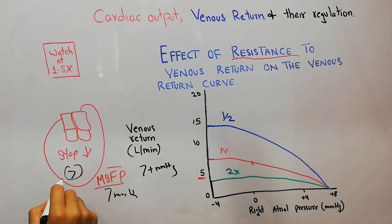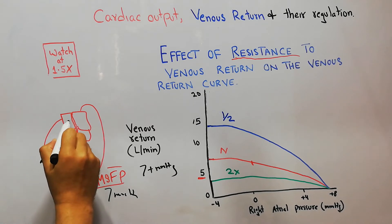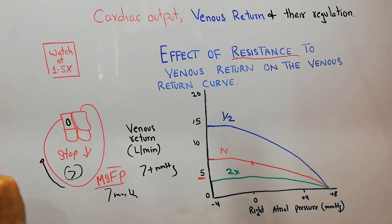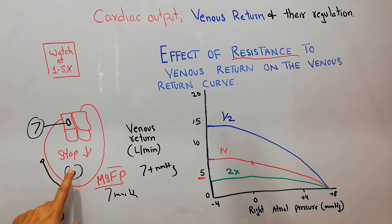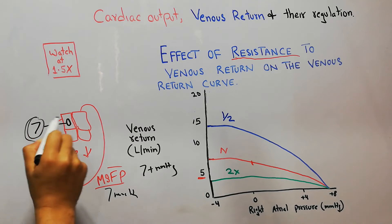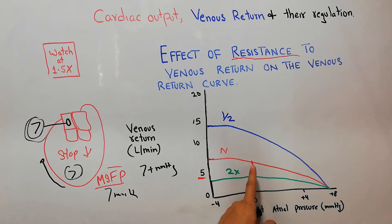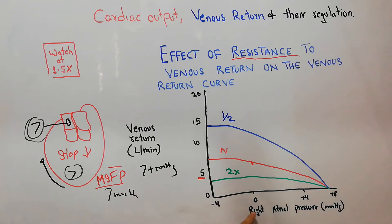This is because the mean systemic filling pressure is also around 7 mmHg, pushing the blood towards the heart. If the pressure at the right atrium increases from 0 to 7, this 7 mmHg mean systemic filling pressure cannot overcome the right atrial pressure, so ultimately venous return decreases to zero at around 7 mmHg right atrial pressure.